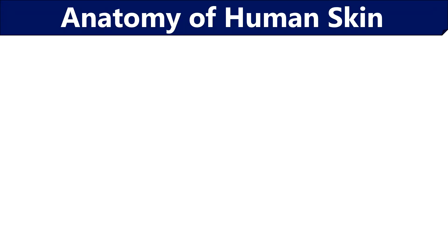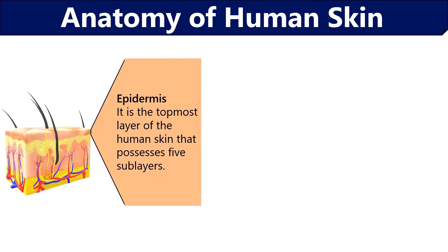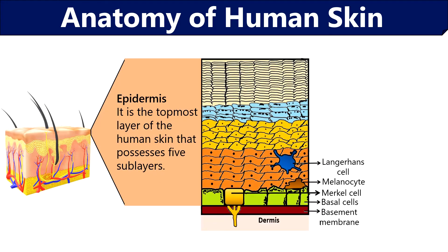Now we will discuss the anatomy of the human skin. The epidermis is the topmost layer of the skin, differentiated into 5 sub-layers, and it contains specialized cells like Merkel cells, melanocytes, Langerhans cells, and keratinocytes. The basement membrane separates the epidermis from the dermis layer.